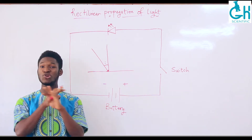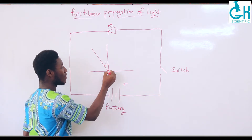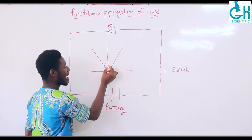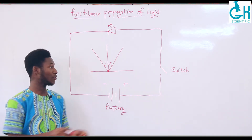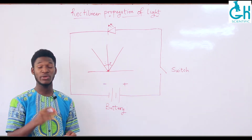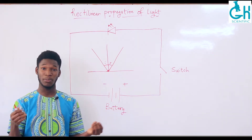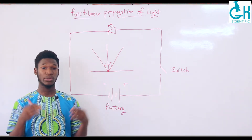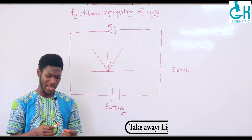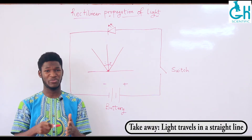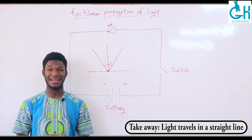If light were not traveling in a straight line, there is absolutely no way you could predict that the light is going to bounce off this surface at the angle of reflection. We know that these two angles — the angle of incidence and angle of reflection — are complementary, adding up to 90 degrees, and we know this precisely because light travels in a straight line.